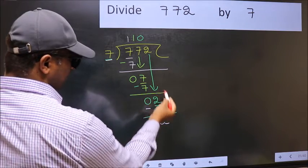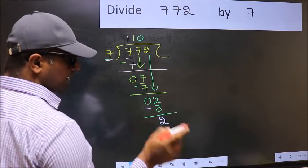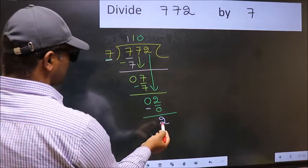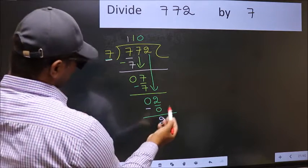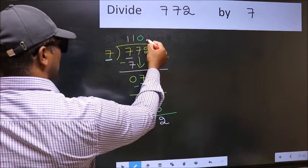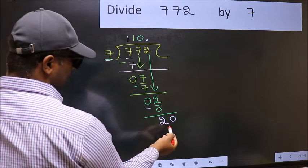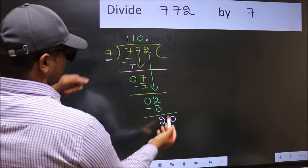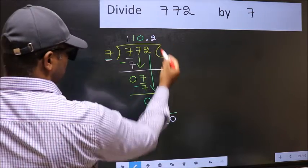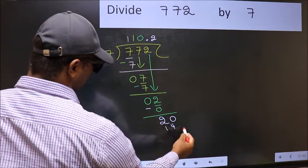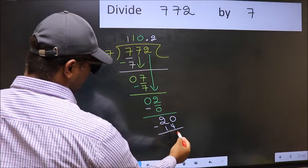Over here, we did not bring any number down, and 2 is smaller than 7. So now you can put dot and take 0. So 20. A number close to 20 in 7 table is 7 to 14. Now you should subtract. You get 6.